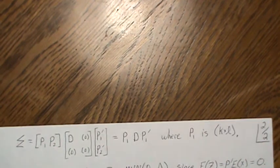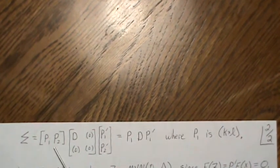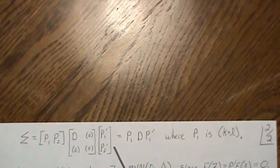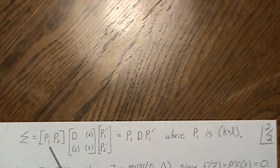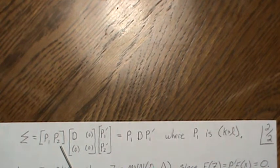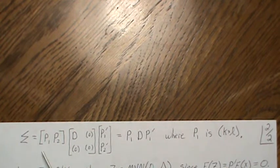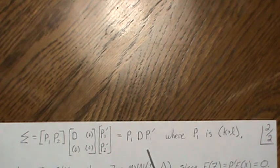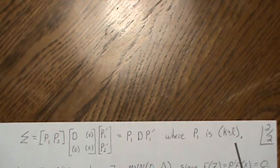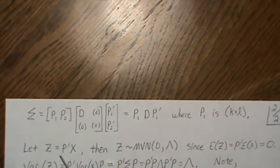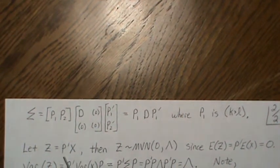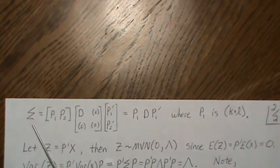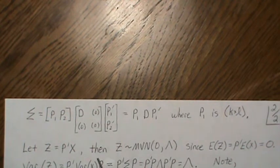By the spectral decomposition, sigma = P*Lambda*P'. If we partition P into P1 (k-by-l) and P2, then Lambda is block diagonal with D, and when we perform the matrix multiplication we get sigma = P1*D*P1'. Now let z = P'x, where P is the full k-by-k orthogonal matrix.